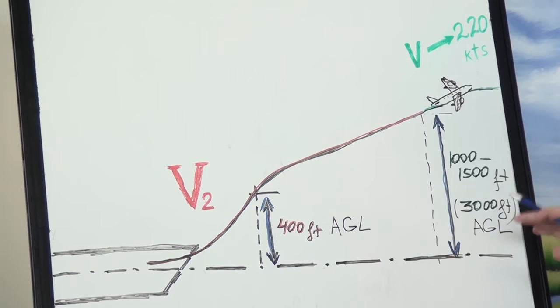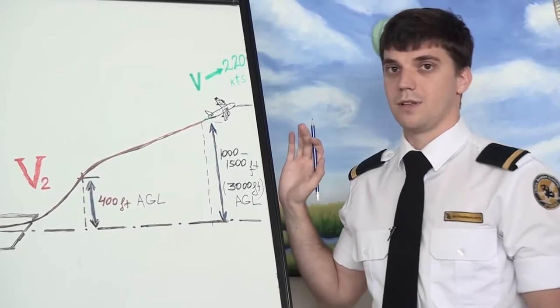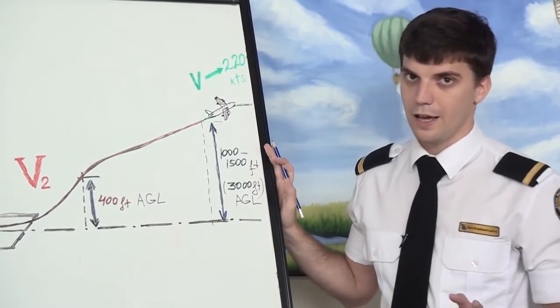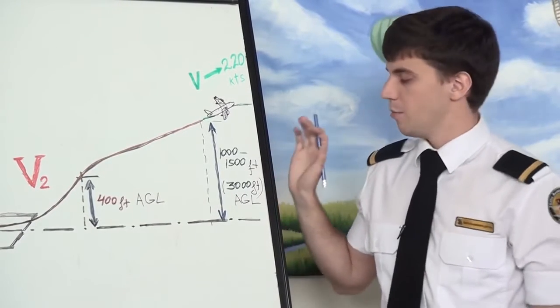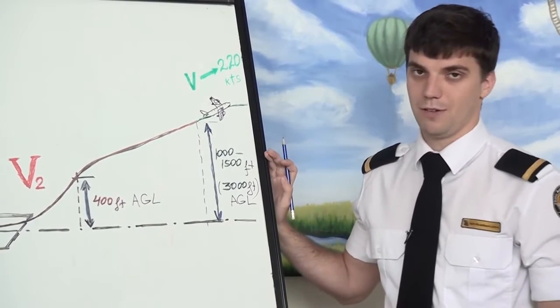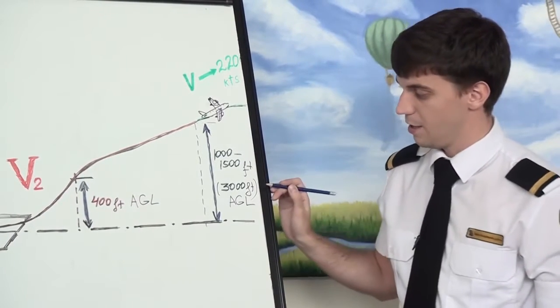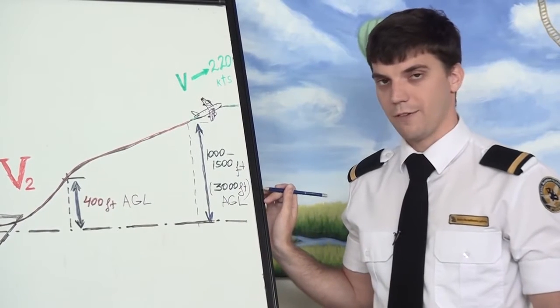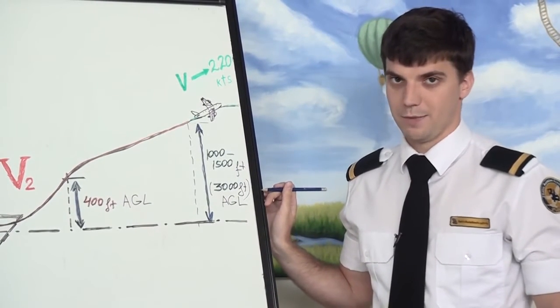After that, when speed allows, you may retract flaps on schedule. Acceleration altitude depends on the aircraft, airline or airport procedure, but usually it is around 1000-1100 feet above ground level and it is 3000 feet if you are flying from an airport which requires noise abatement.